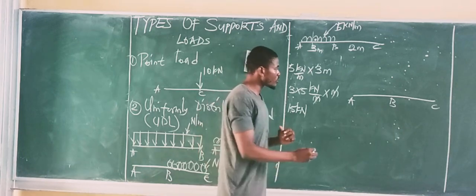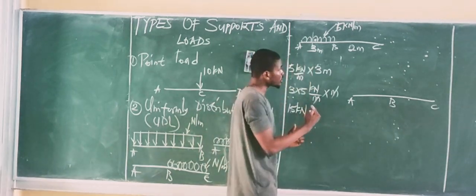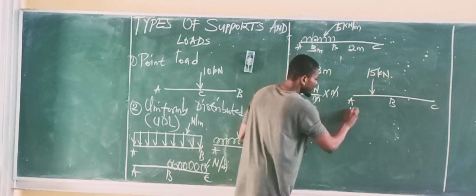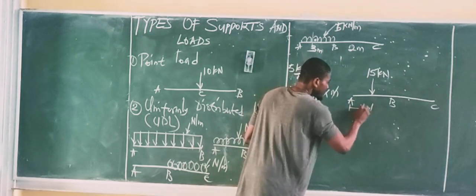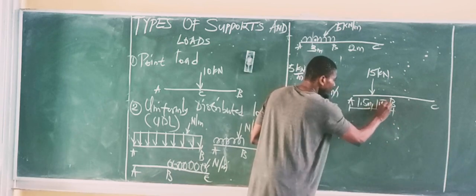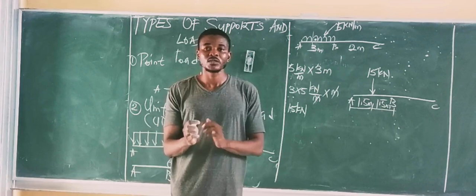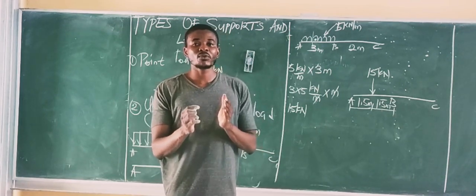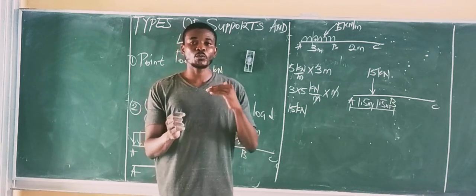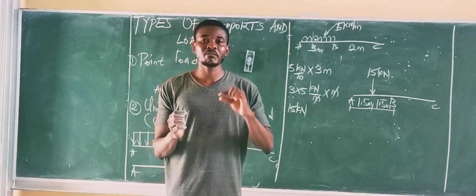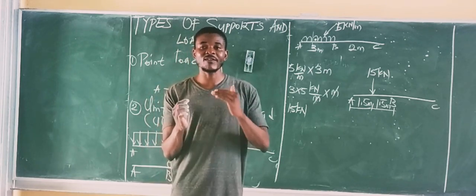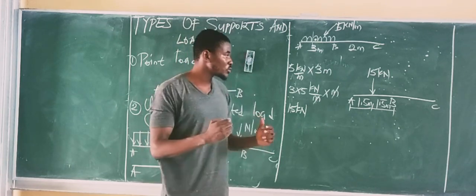So the 15 kN point load is placed 1.5 meters from point A and 1.5 meters from point B. To summarize: multiply the intensity of the UDL by the length covered to get the point load, then place that load at the midpoint of the length covered by the UDL.